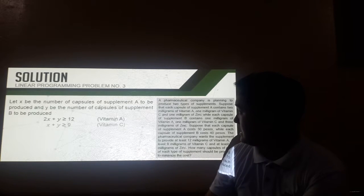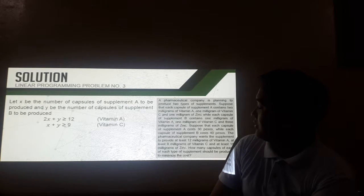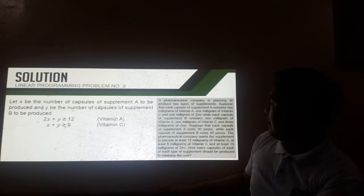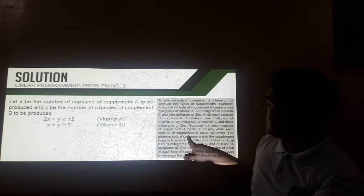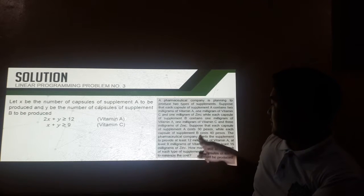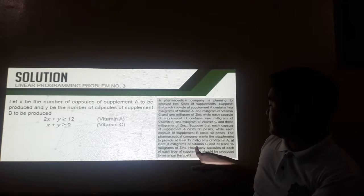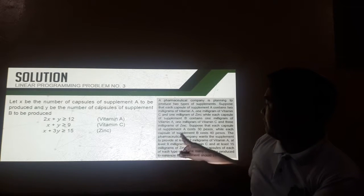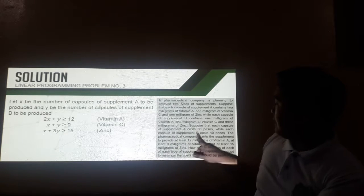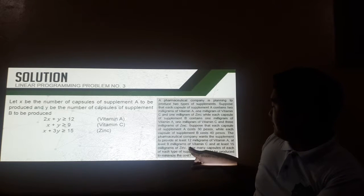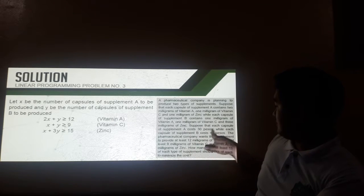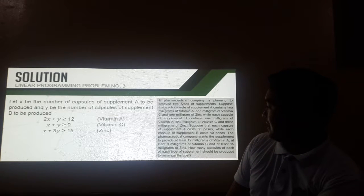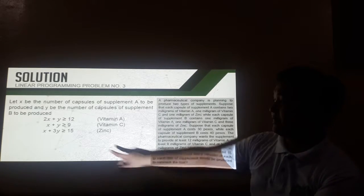Next, for vitamin C, X plus Y should be greater than or equal to 9. Because for supplement A, we should have 1 milligram of vitamin C, and for supplement B, we also have 1 milligram of vitamin C, and we should have at least 9 milligrams of vitamin C. Also, for zinc, we should have 1 milligram of zinc for supplement A, and 3 milligrams of zinc for supplement B, and we should have at least 15 milligrams of zinc.